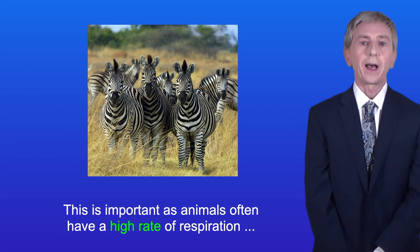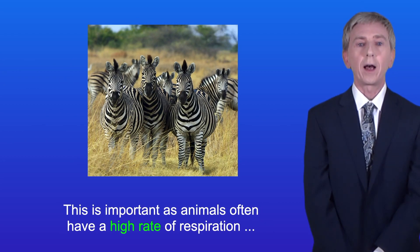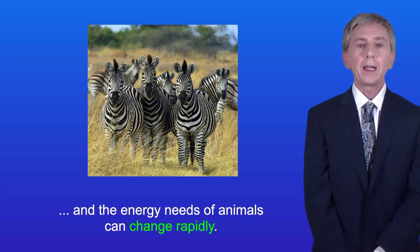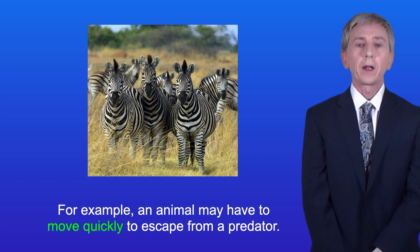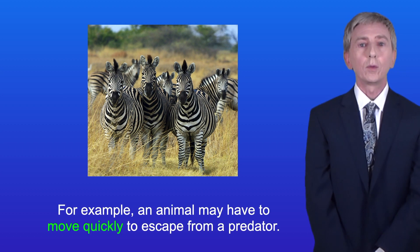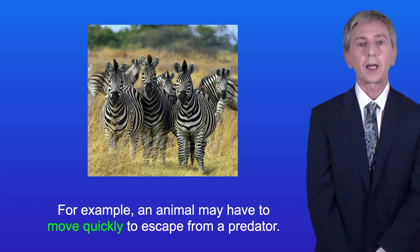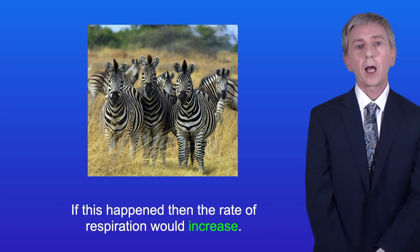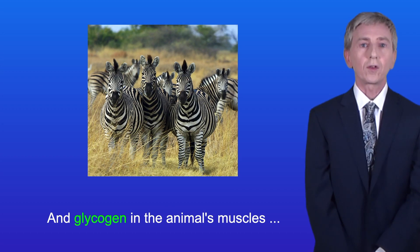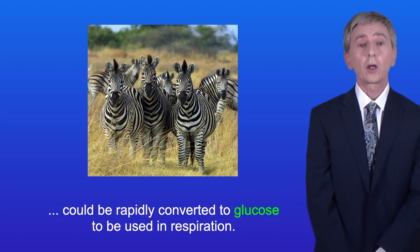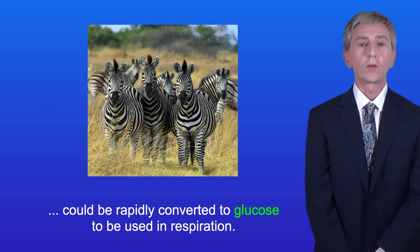This is important as animals often have a high rate of respiration and the energy needs of animals can change rapidly. For example, an animal may have to move quickly to escape from a predator. If this happened then the rate of respiration would increase and glycogen in the animal's muscles could be rapidly converted to glucose to be used in respiration.